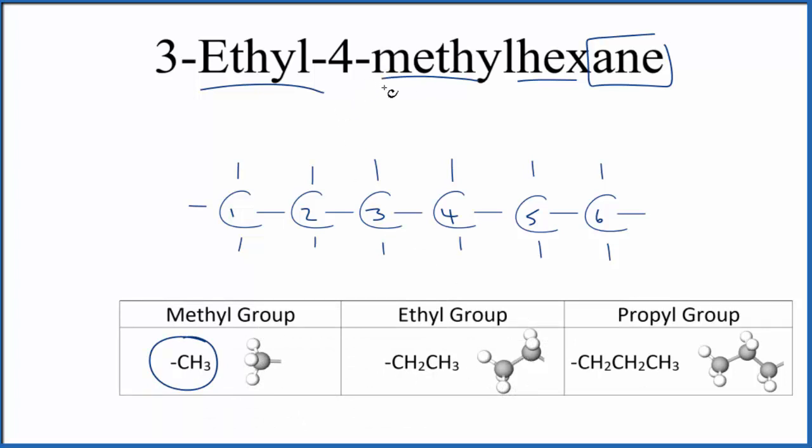What we're going to do is the methyl will go on the fourth carbon, this one right here. The ethyl, that's the two carbons surrounded by hydrogens, will go on the third carbon in our hexane chain, right here. So let's add those.